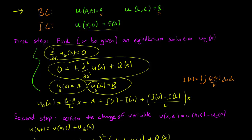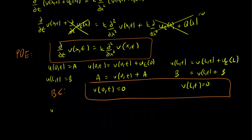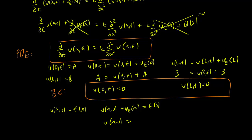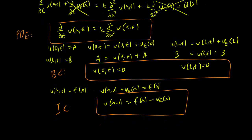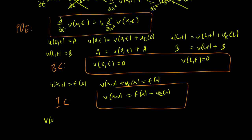Now let's see what happens to our initial conditions. We have u(x,0) = f(x). By the change of variable, u(x,0) = v(x,0) + u_e(x) = f(x), so v(x,0) = f(x) − u_e(x). Our initial condition also changes. As you can see, we now have the one-dimensional heat equation with homogeneous Dirichlet boundary conditions, and we already know how to solve this.